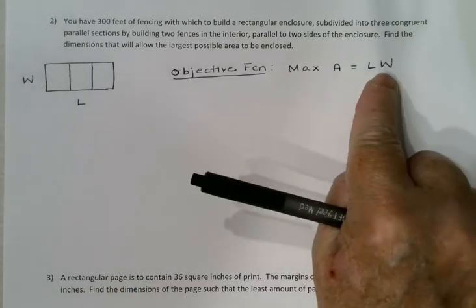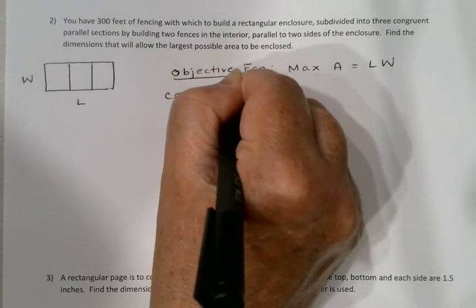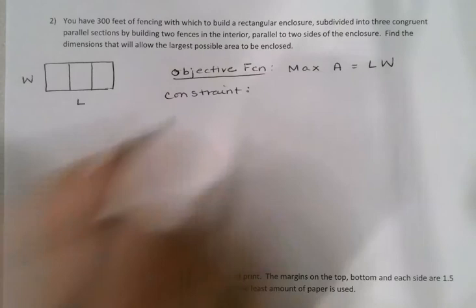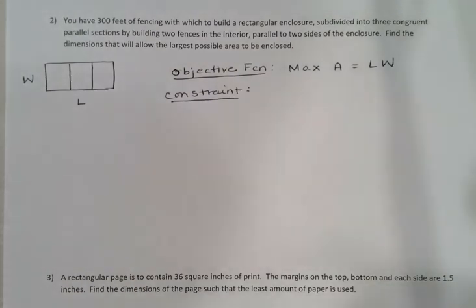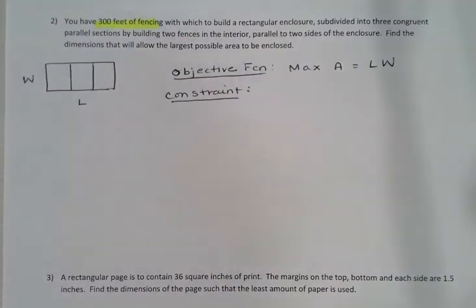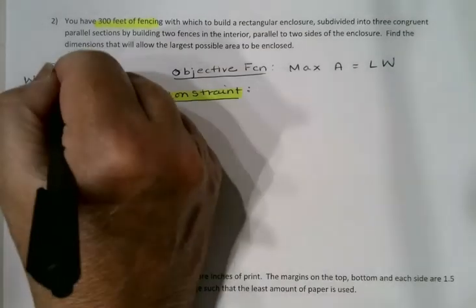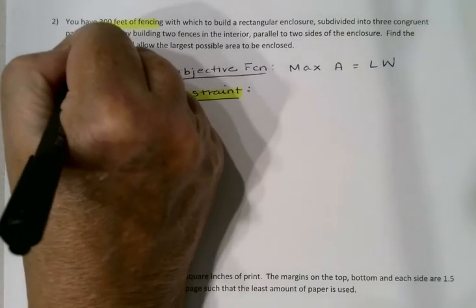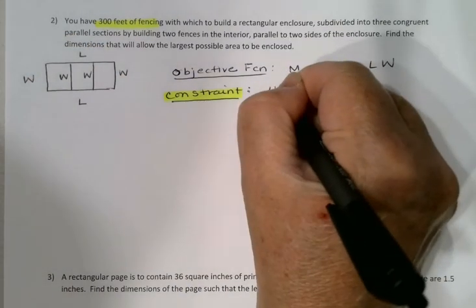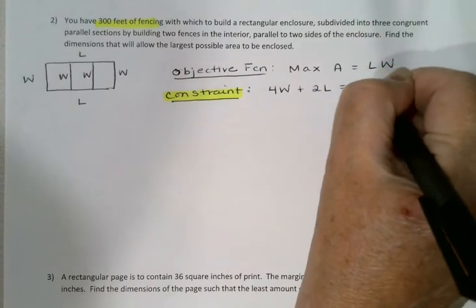Too many variables, so I need a constraint. In this case I was told that I have 300 feet of fencing. So I'll write for my constraint equation, what have I got to build with that 300 feet? I actually have to build four widths and two lengths. So 4W + 2L = 300.